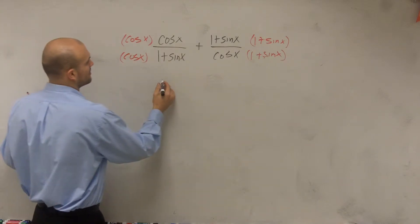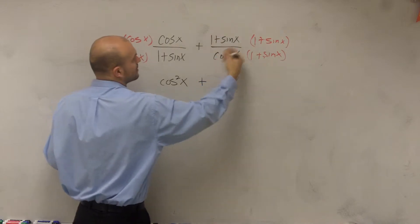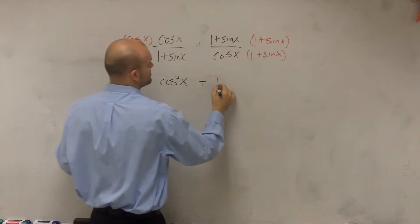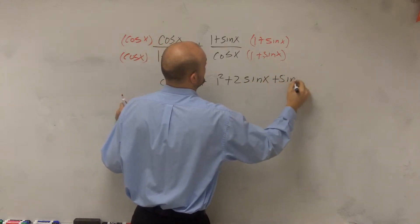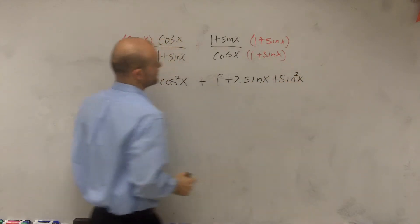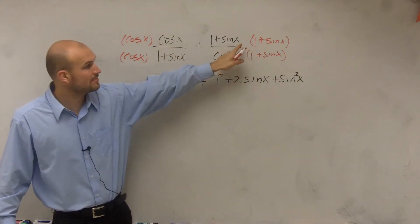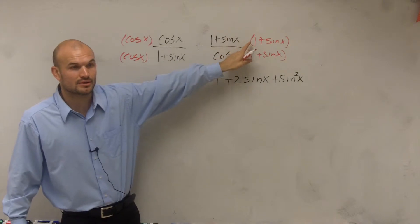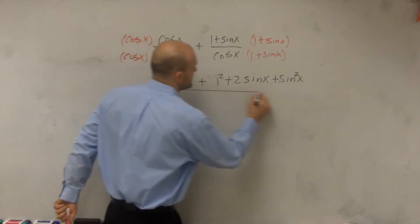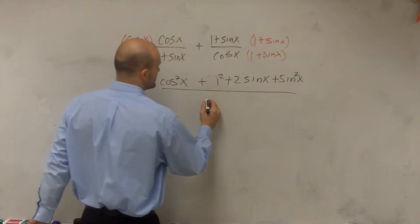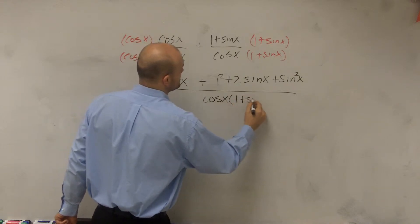Okay, so then what I get is cosine squared of x plus, here's a binomial, so it's going to be 1 squared plus 2 sine of x plus sine of x squared. Remember, this is not a difference of two squares. This is a perfect square binomial, so you're going to write it as a perfect square trinomial. Then all of this is over our common denominator, which is cosine of x times 1 plus sine of x.